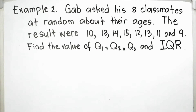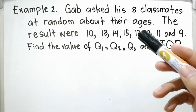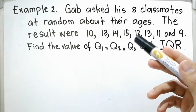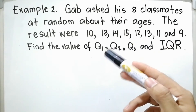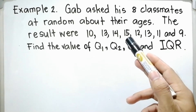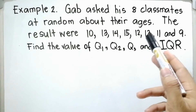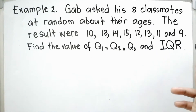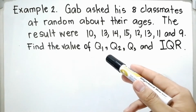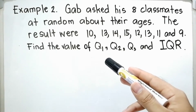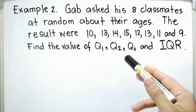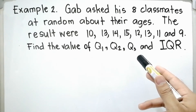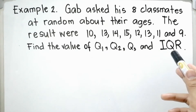Example number 2: Gab asked his 8 classmates at random about their ages. The results were 10, 13, 14, 15, 12, 13, 11, and 9. Find the value of Q1, Q2, Q3, and the interquartile range.